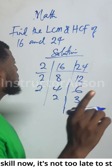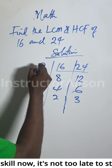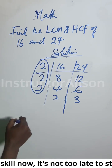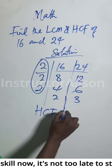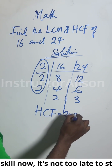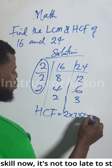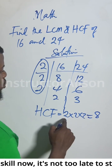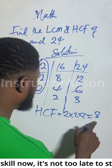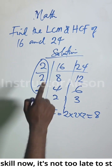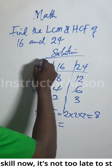To get the highest common factor, we take two times two times two — that's the HCF, which gives us two by two is four, by two is eight. So the highest common factor is 8.